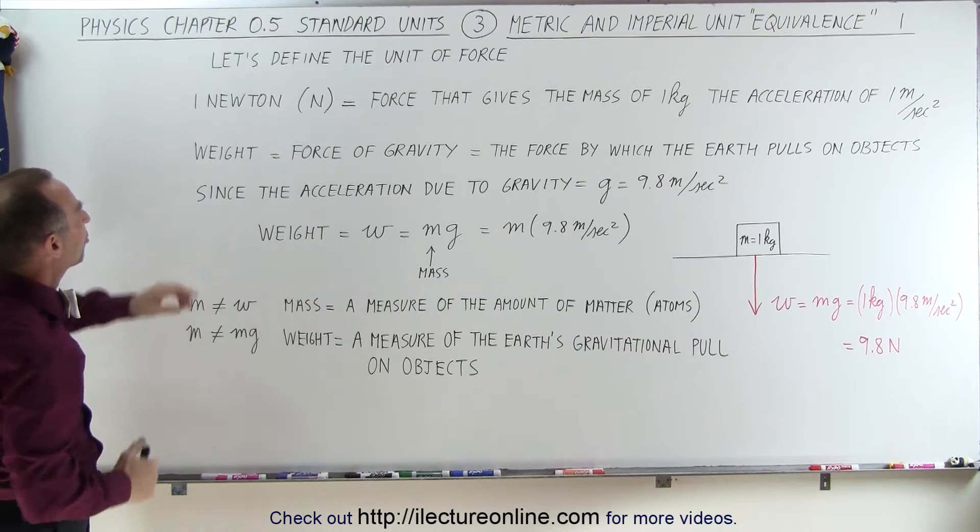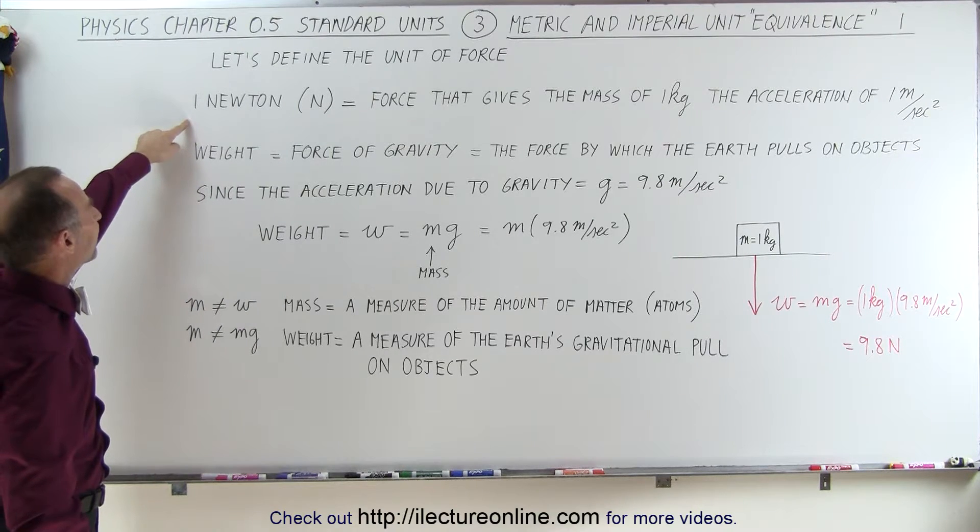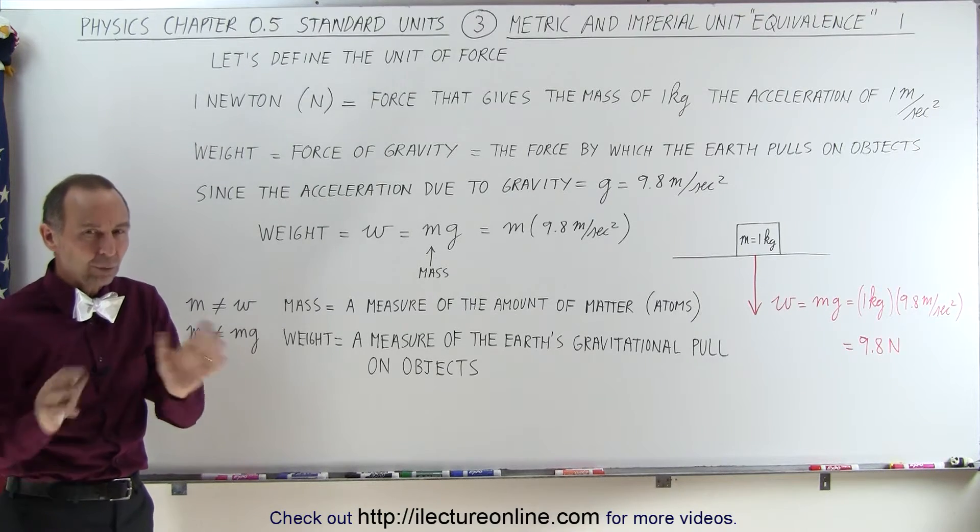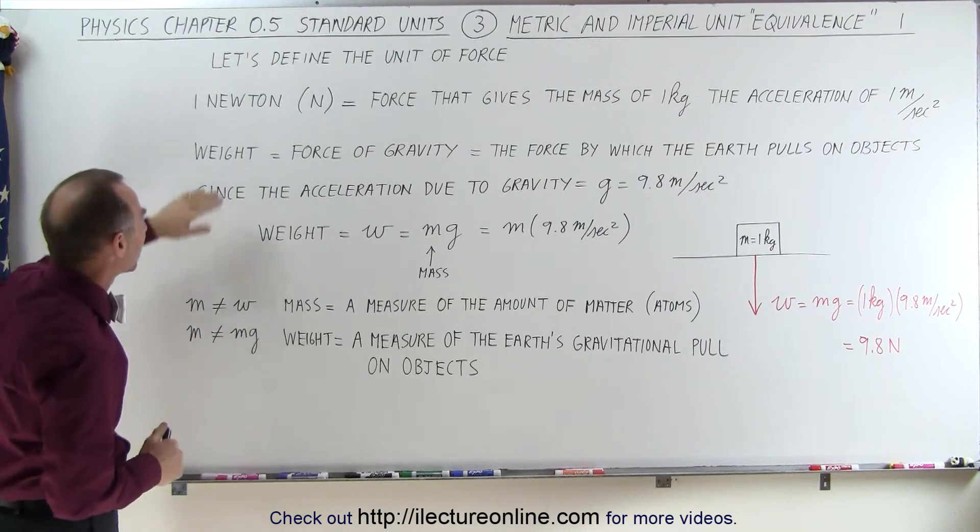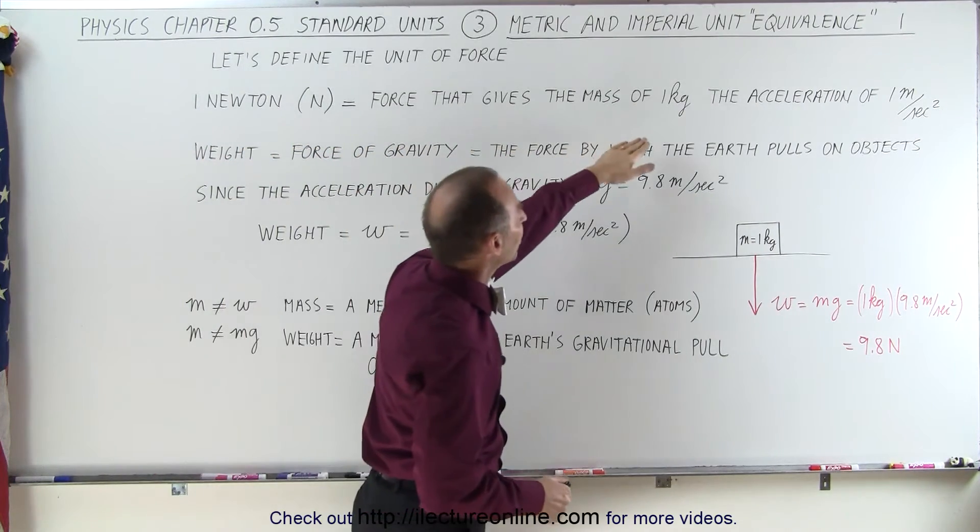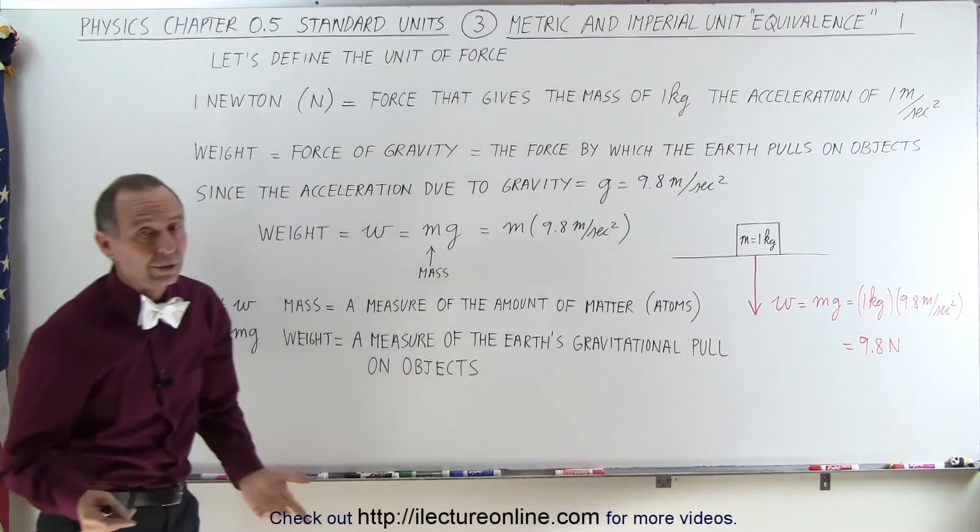In the metric system, the unit of force that we use is a newton. In the imperial system, it's called a pound, and we'll show you the equivalents later. But a newton is the force that gives the mass of one kilogram the acceleration of one meter per second squared.